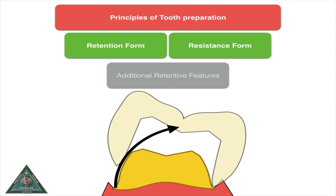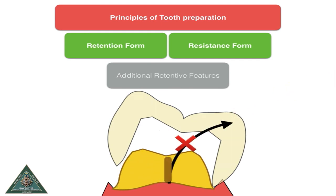If there is lots of freedom of displacement and the arc of displacement is very wide, it can be reduced by improving additional retentive features. For example, in a crown that can easily get displaced, adding a proximal groove makes it very difficult for the crown to get displaced. A proximal groove or proximal box are the most common retentive features. You can also use pin-retained restorations, but grooves are better because you have more surface area and can place multiple grooves in a single tooth preparation.